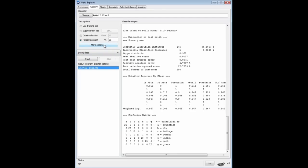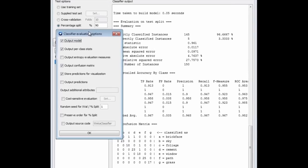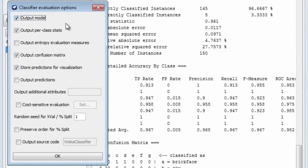If I go to the More Options menu, I've got a number of options here, which are quite useful. We're outputting the model, outputting statistics, we can output different evaluation measures, we're doing the confusion matrix, we're storing the prediction for visualization, we can output the predictions if we want, we can do a cost-sensitive evaluation, and we can set the random seed for cross-validation or percentage split.